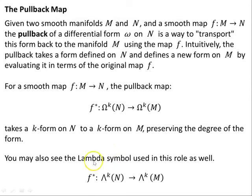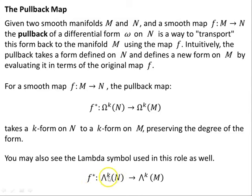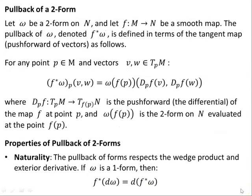You may also see the lambda symbol used in place of capital omega for the space of K-forms on N. So F*, the pullback, is a map from the space of K-forms on N to the space of K-forms on M.